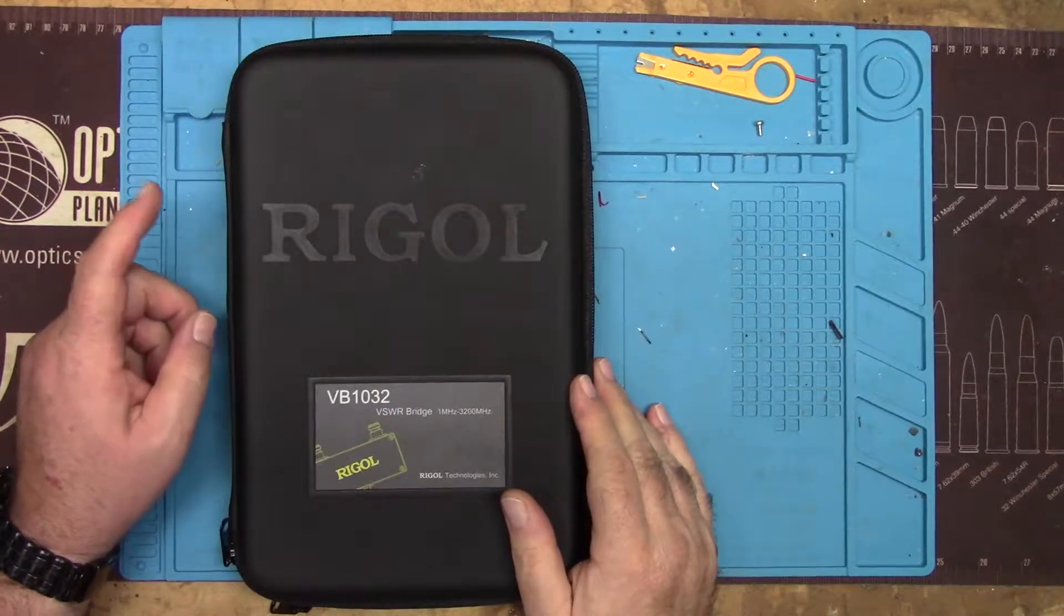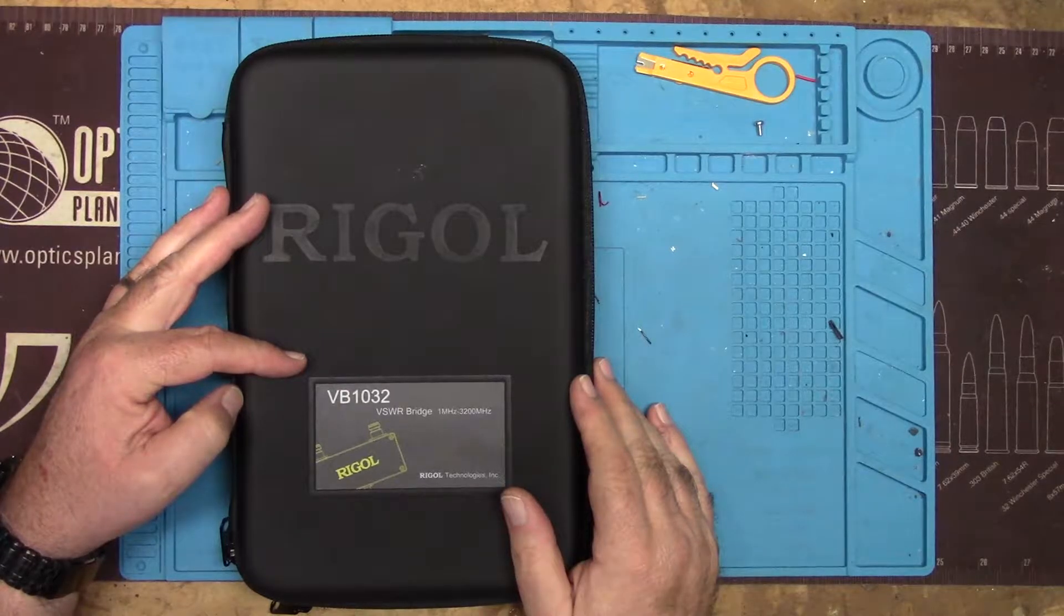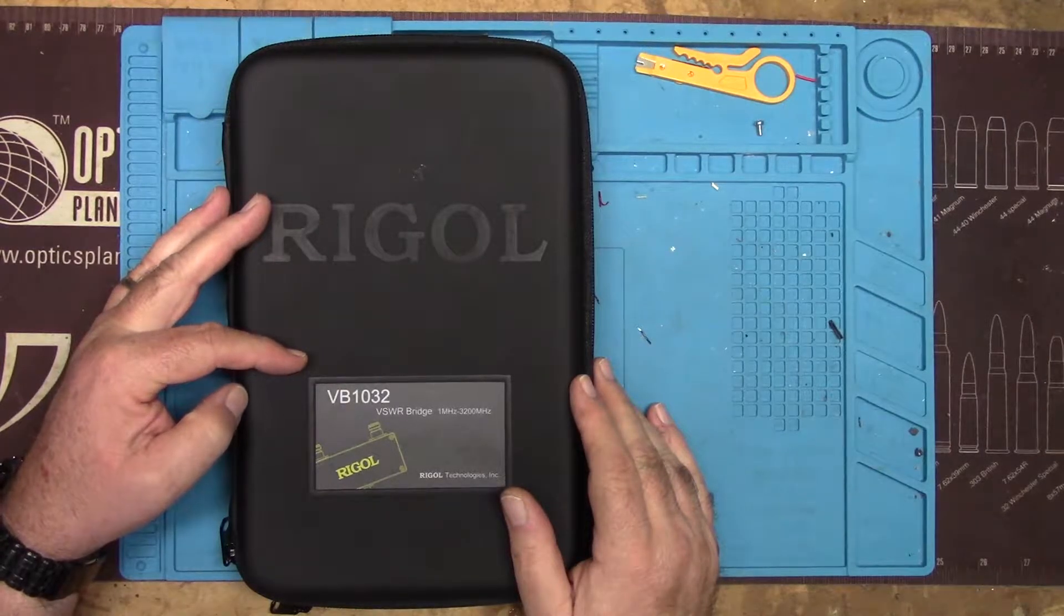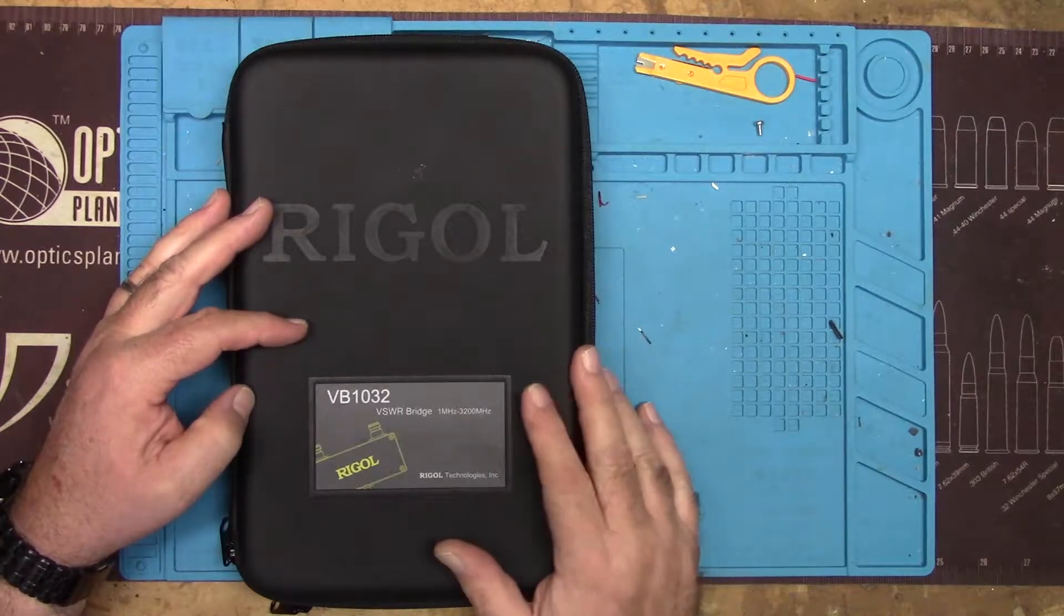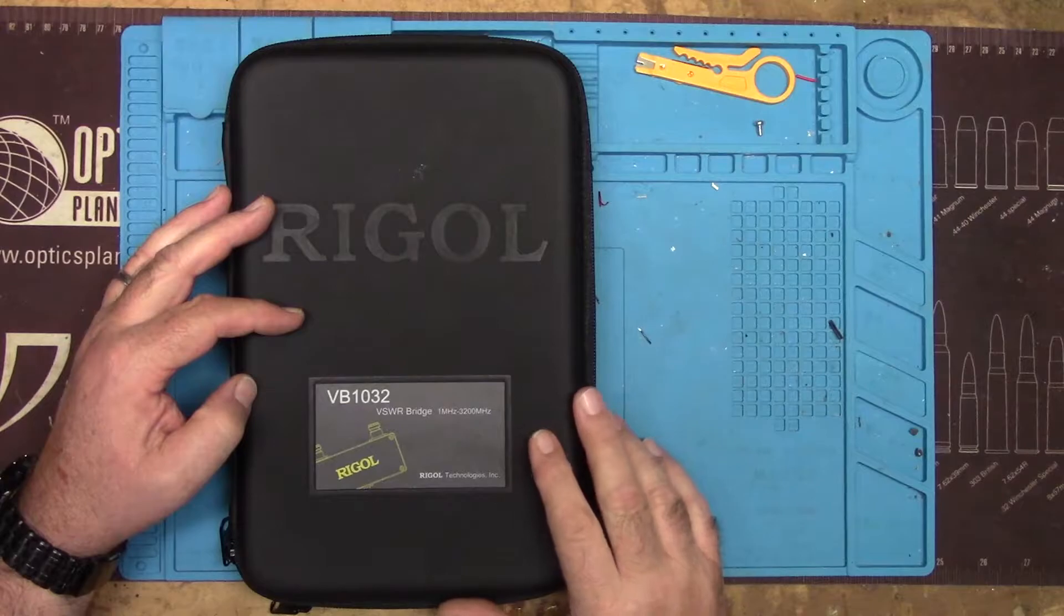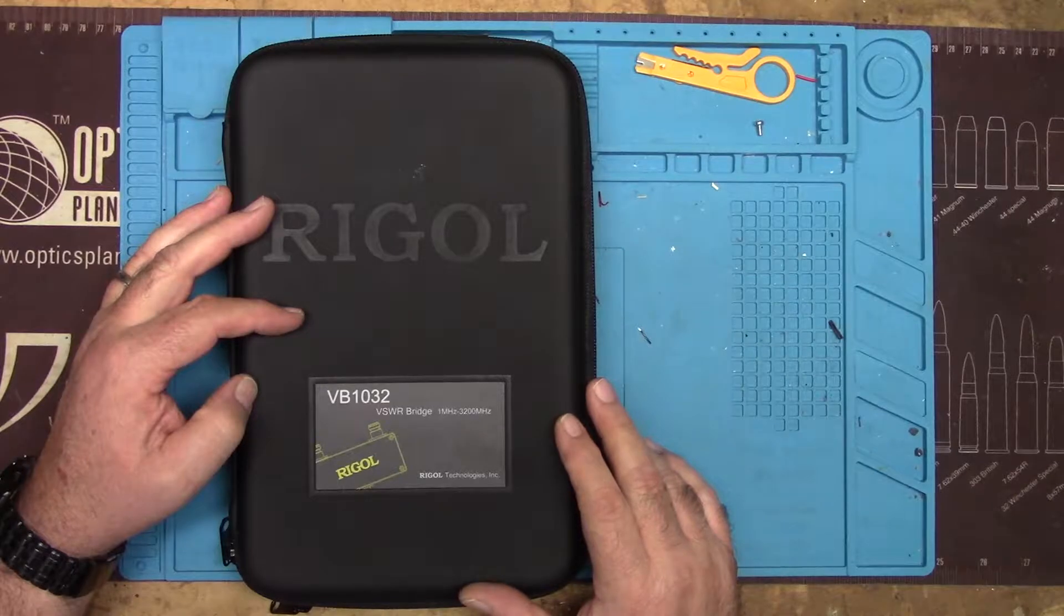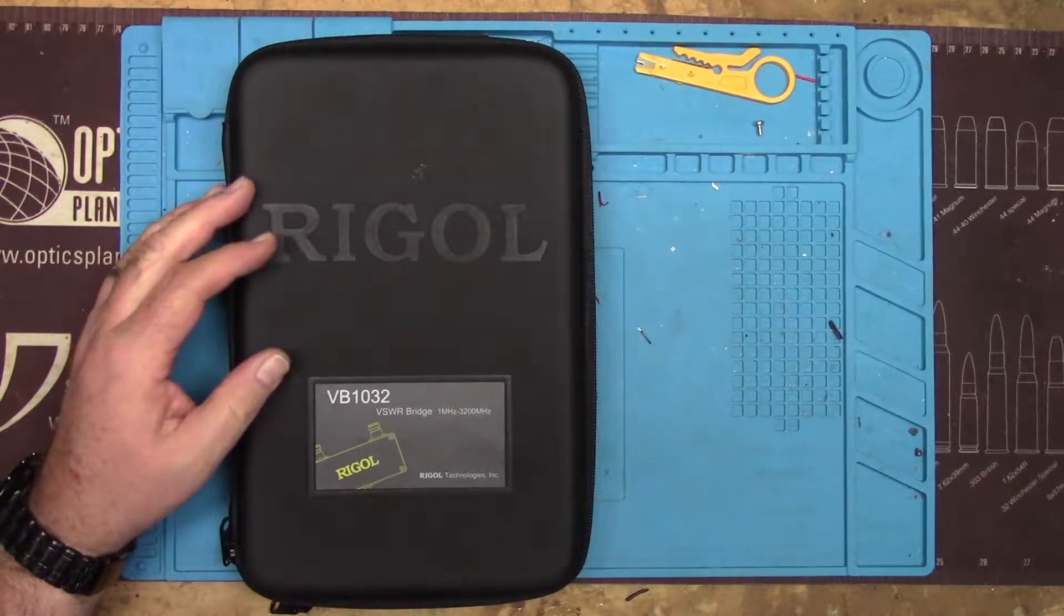Hey guys, today we have a Regal VB1032 VSWR Bridge to take a look at. This is a device that goes with a spectrum analyzer to allow you to make very precise SWR measurements of a device, an antenna typically.